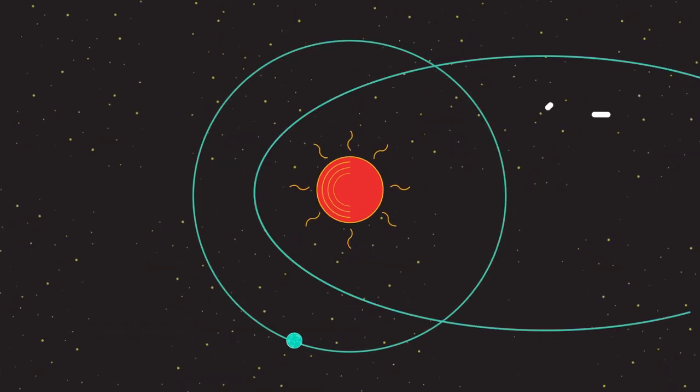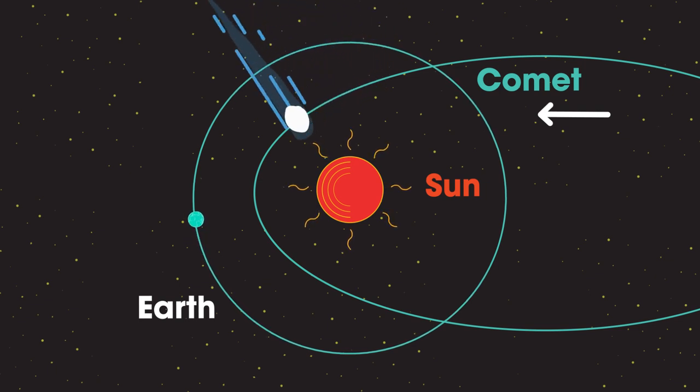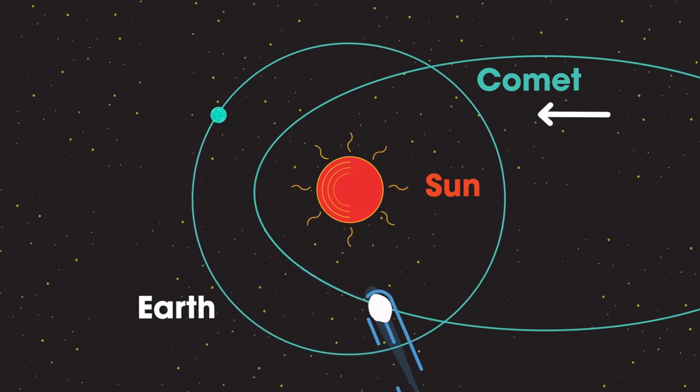These ancient objects only become visible when their orbit brings them near to the Sun. That's when a huge tail of vaporized material is lit up by sunlight. Notice that the tail always points away from the Sun as it passes by, showing the effect of the invisible solar wind, leaving the surface of the star.